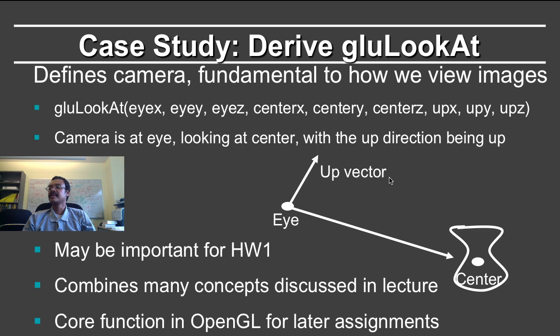You have an up vector of the camera, which is what is the up direction of the camera. That is important for determining what parts of the image are on the x axis and the y axis. What is the orientation of the image with respect to the world? It corresponds to rotating your camera.